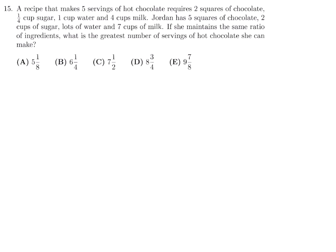A recipe that makes 5 servings of hot chocolate requires 2 squares of chocolate, a quarter cup of sugar, 1 cup of water and 4 cups of milk. Jordan has 5 squares of chocolate, 2 cups of sugar, lots of water and 7 cups of milk. If she maintains the same ratio of ingredients, what is the greatest number of servings of hot chocolate she can make? We don't have to worry about water. She's got more than enough water.